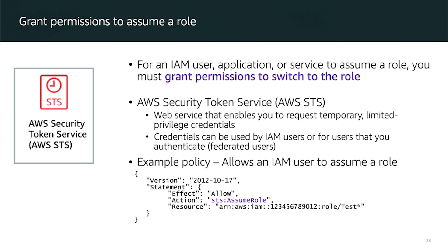As an example, a policy allows an IAM user to assume any role defined in an AWS account number, as long as the role name starts with — for example — 'test', as shown here in this slide.